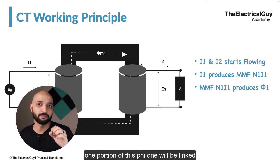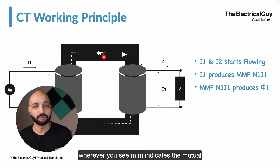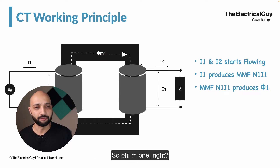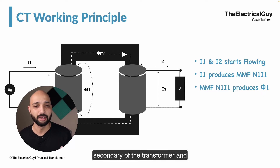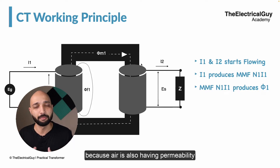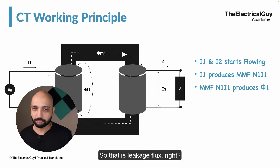This magnetomotive force will generate its own flux, which is given by phi1. One portion of phi1 will be linked with the secondary of the transformer — that is given by phiM1, where M indicates mutual inductance or mutual linking. Some part of phi1 will not link to the secondary of the transformer — that is called phiF1, which is the leakage flux. This is the flux that will link with the surrounding air, since air also has permeability. So that is leakage flux.